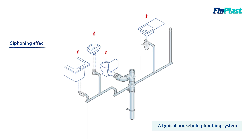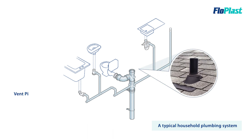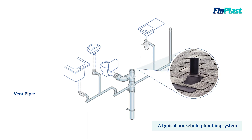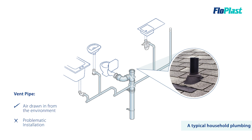The traditional solution was to have a vent connected to the system that was open to the atmosphere, installed through the roof or around the roof line in a swan neck. This would draw air into the pipe from the environment, stopping it from being drawn from the plug holes in the property. However, as this pipe is essentially an open end of a drain, there are regulations in place on where it can be placed — such as proximity to windows — and it can be problematic from a health and safety perspective.